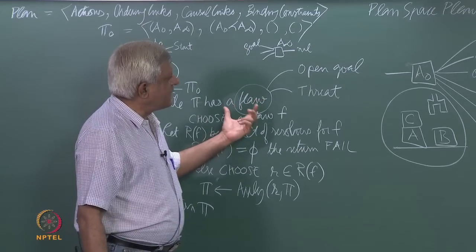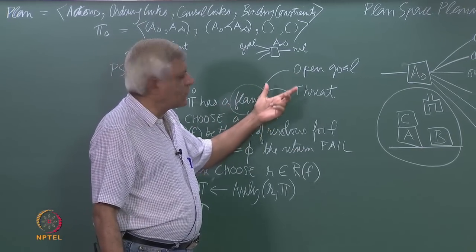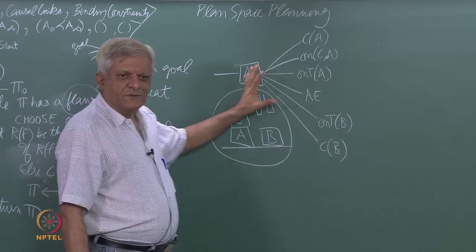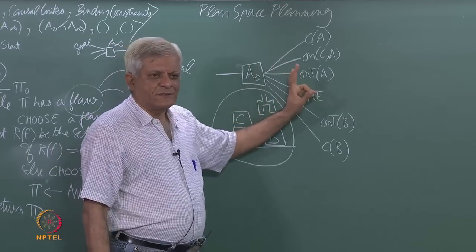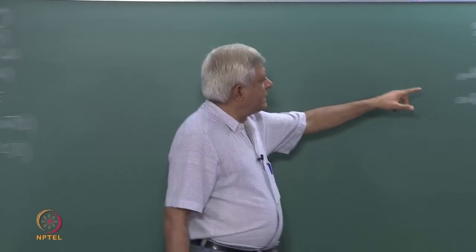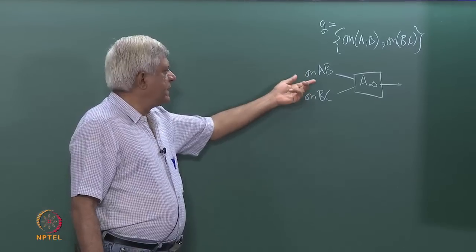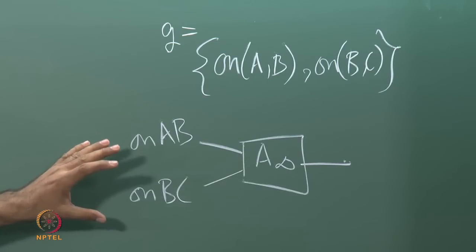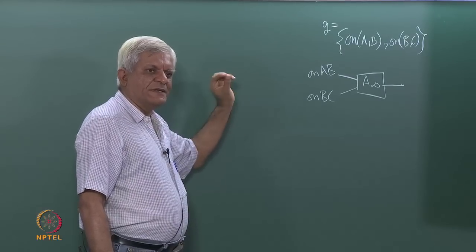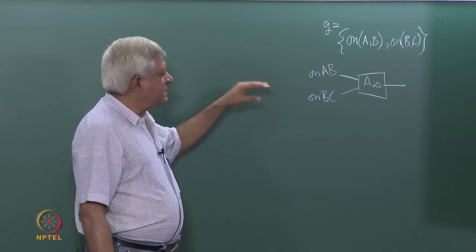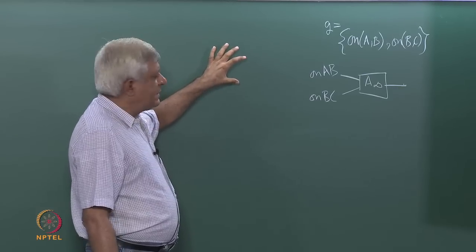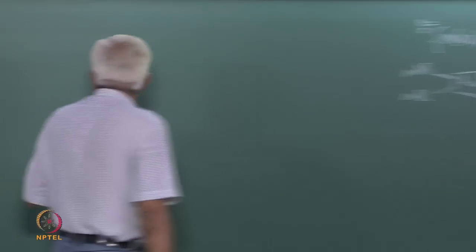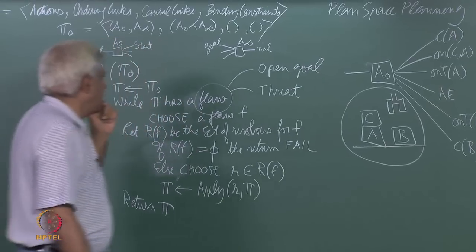There are two kinds of flaws in a plan: open subgoals and threats. The initial partial plan with only a₀ and a∞ has two open goal flaws. An open goal means nothing is supplying that predicate — every open goal must have a supporting causal link, meaning some action must produce the predicate consumed by another action.